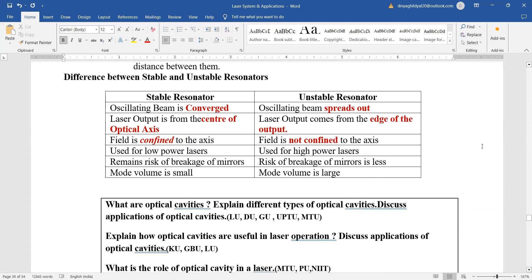Used for low power lasers, unstable is used for high power lasers. Risk of breakage of mirrors is there in stable, unstable but in unstable it is less. Mode volume is small in stable and large in unstable.